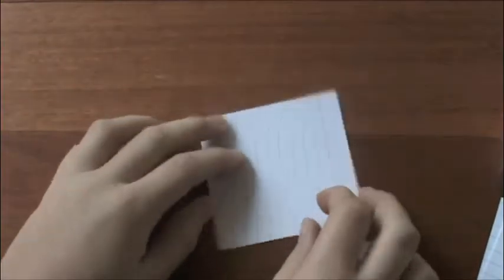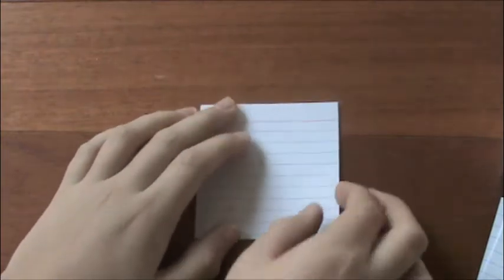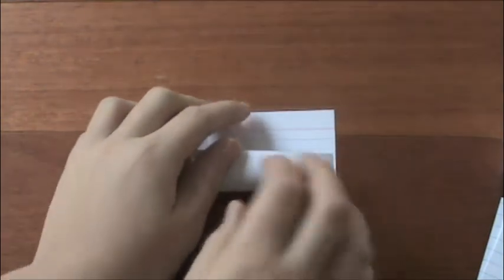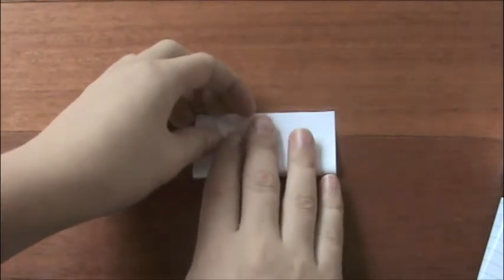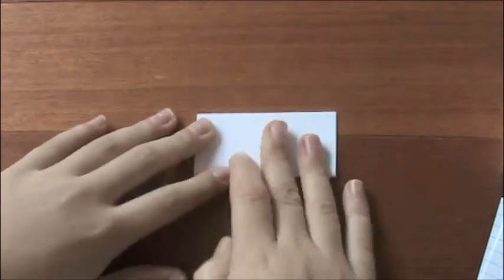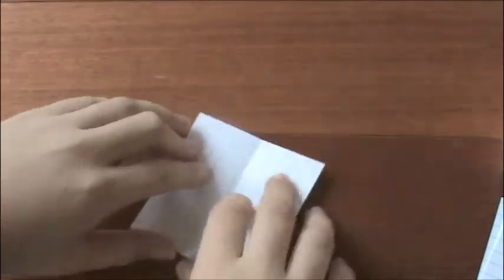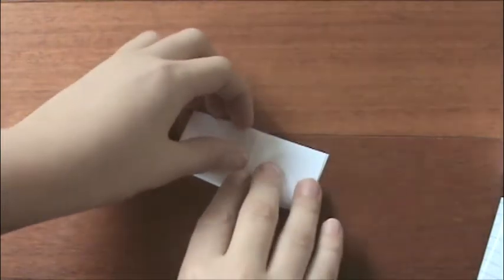To make the units, what you want to do first is make two mountain folds on the vertical and horizontal axis. Like that. Good crease. Unfold. Turn. Repeat.